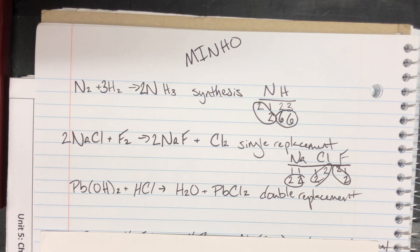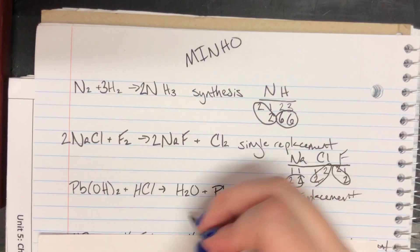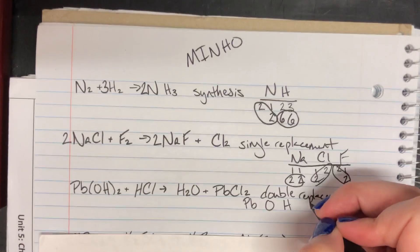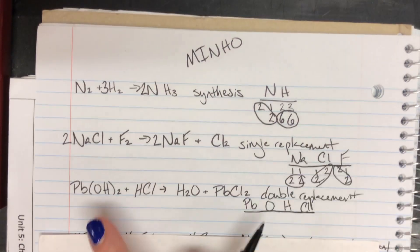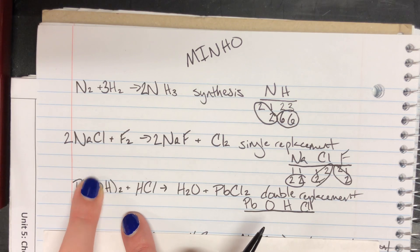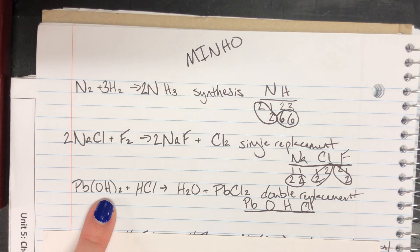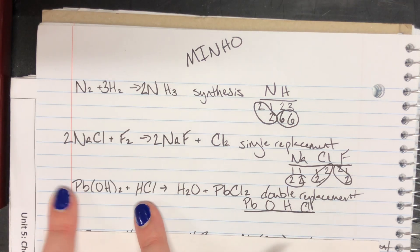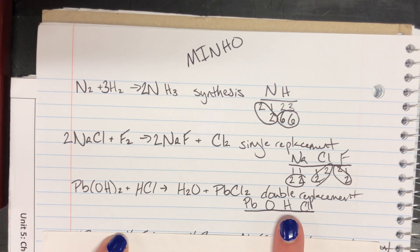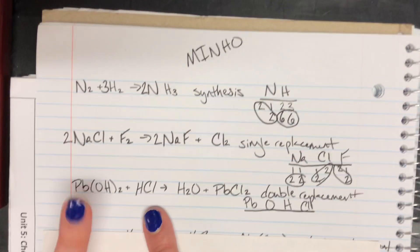Next I have lead(II) hydroxide plus hydrogen chloride going to water and lead(II) chloride. I'll write out everybody: lead, oxygen, hydrogen, and chlorine. We could have used the polyatomic version — hydroxide — and counted it as one single thing; that's what the I in MINHO is for. However, it's not readily viewable on the product side, so I'll break it down into oxygen and hydrogen. We need to be careful because hydrogen appears in multiple places on the left-hand side, so I have to include both sources.